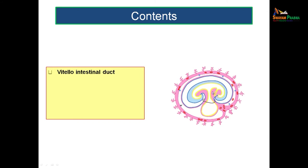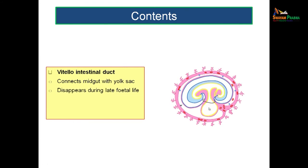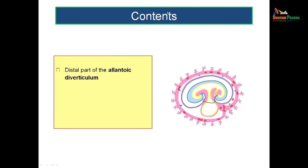The vitello-intestinal duct connects the midgut with the yolk sac; it degenerates in late fetal period but if it persists after birth, that condition is known as Meckel's diverticulum. The allantoic diverticulum vascularizes the umbilical cord — umbilical vessels are derived from its vessels. In late fetal period its remnant is seen as the urachus, which after birth forms the median umbilical ligament, extending from the apex of the urinary bladder to the anterior abdominal wall.